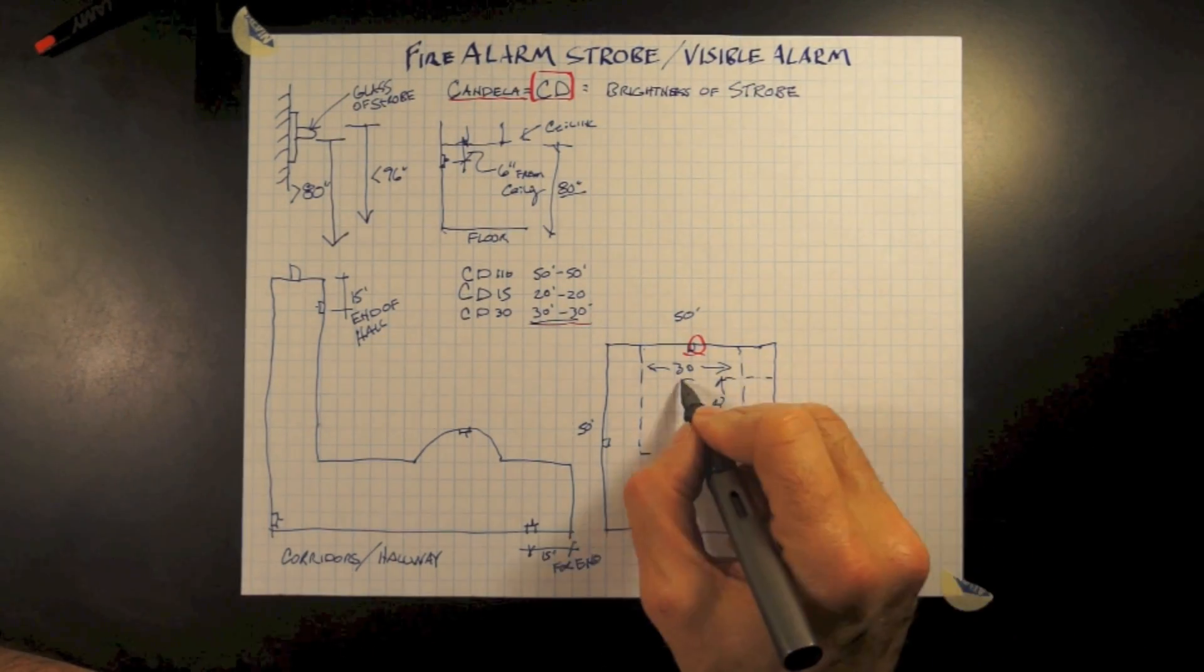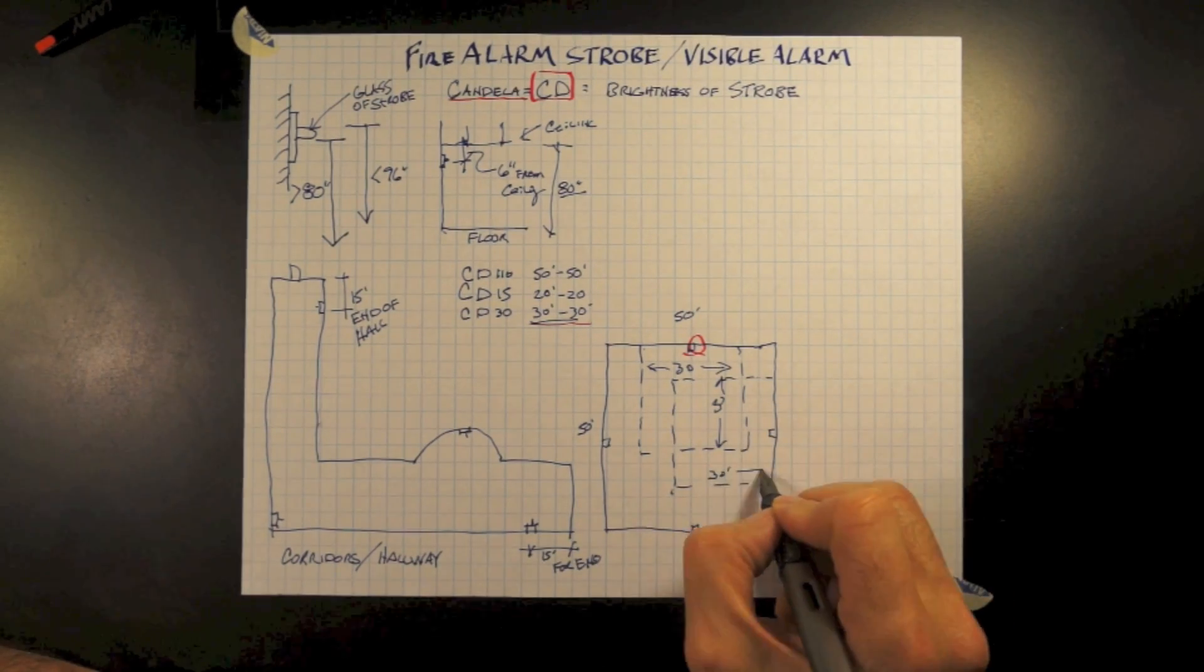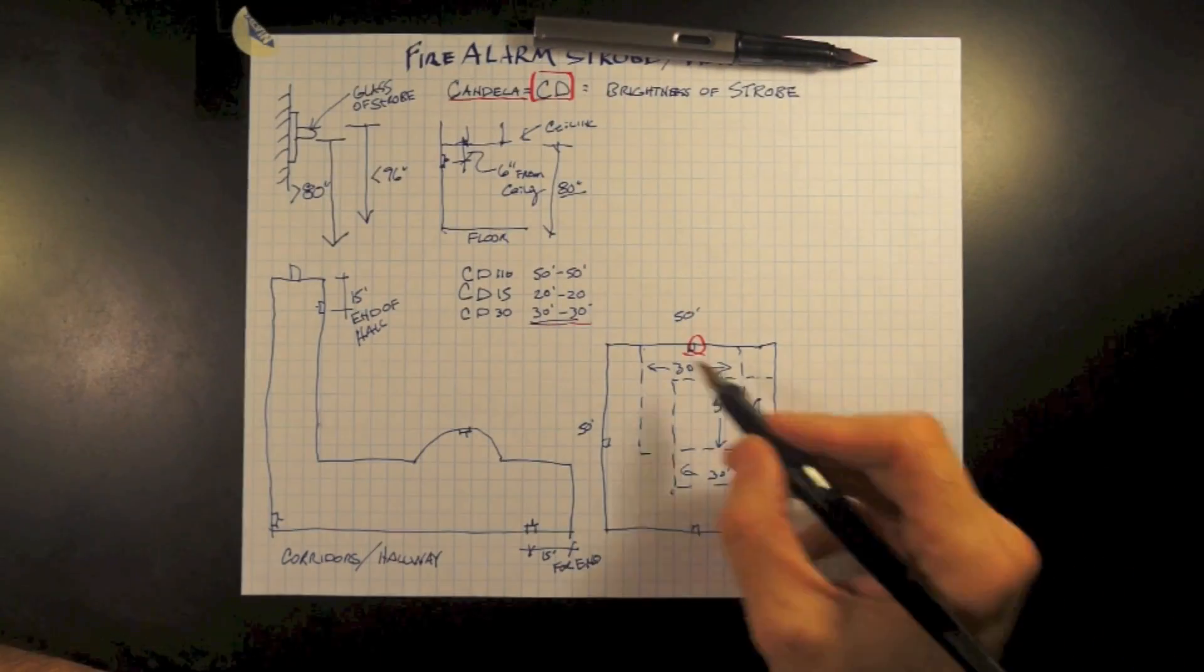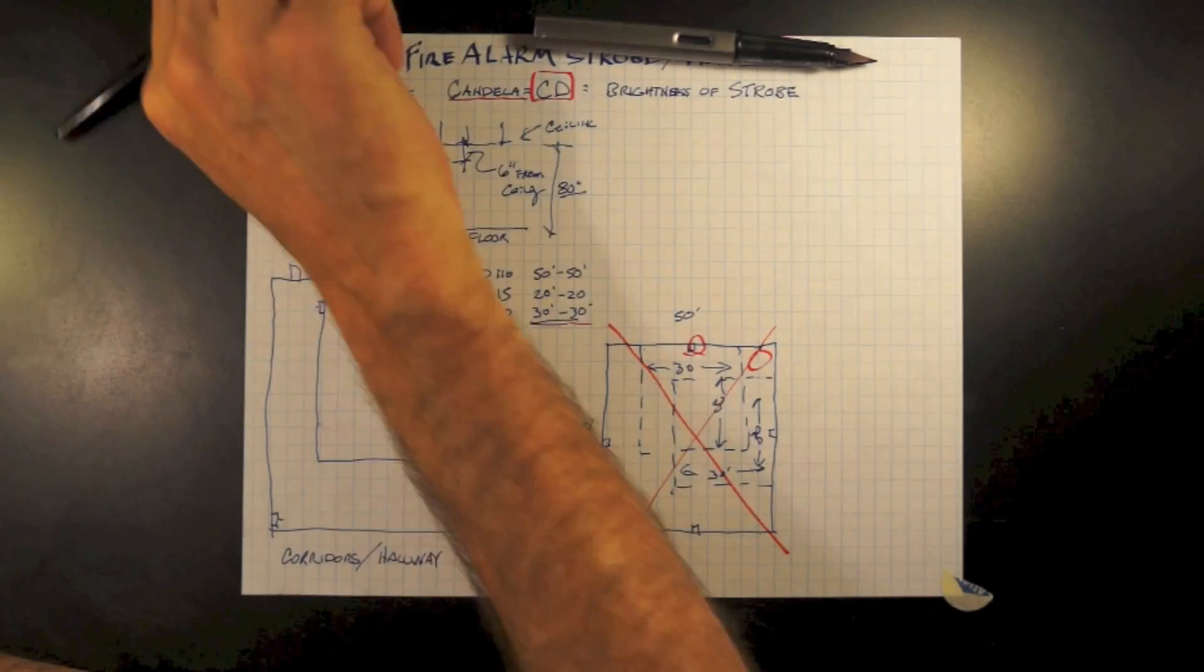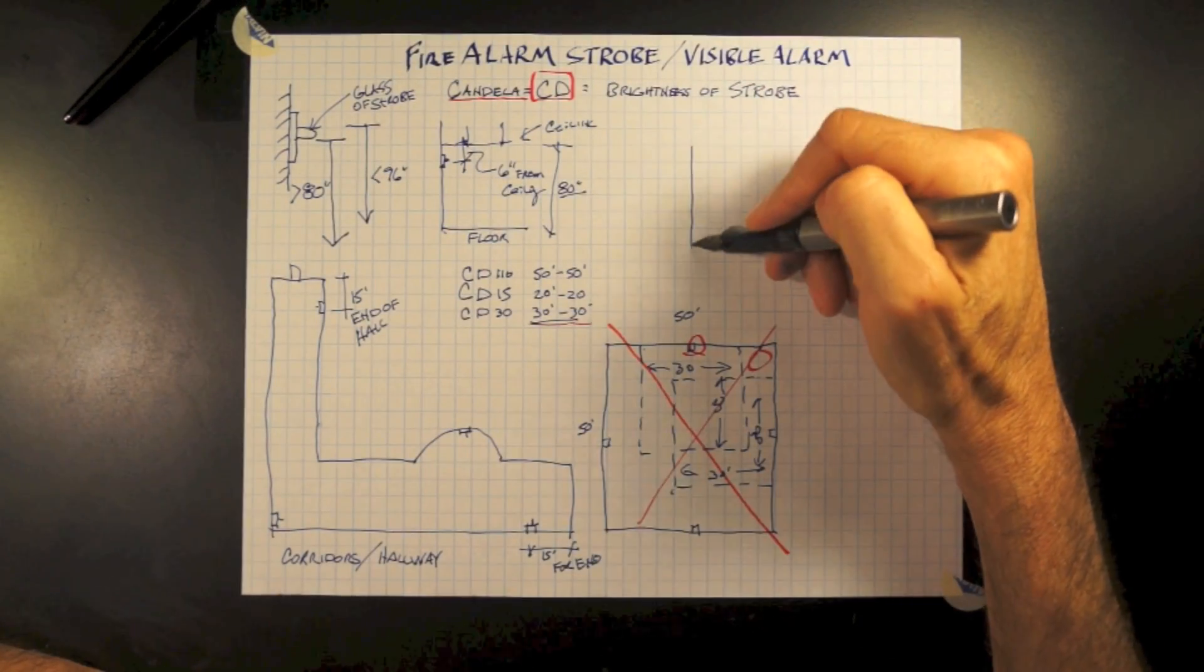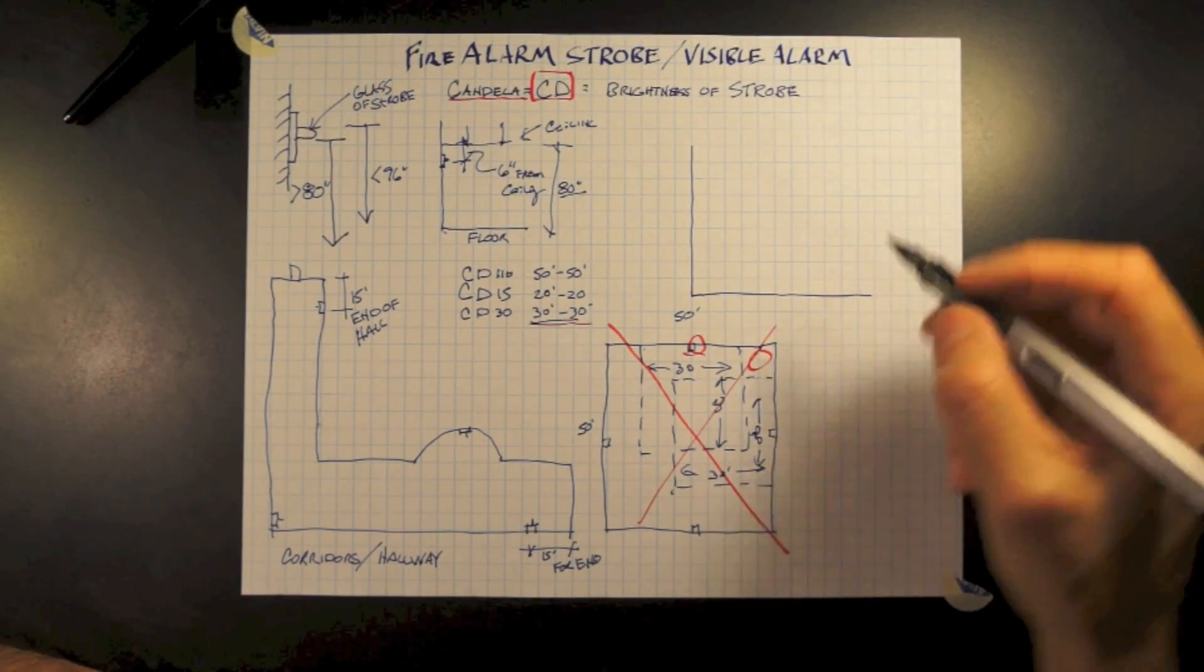Then the strobe in the center of the other wall, again we have 10 feet from either side. This is leaving a void in the corner or corners. This is not the proper way to design it.